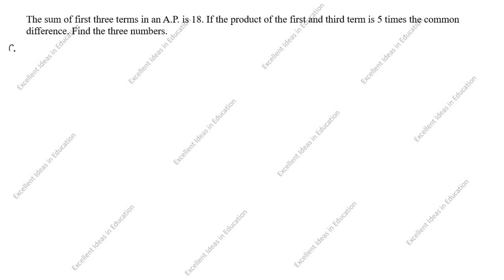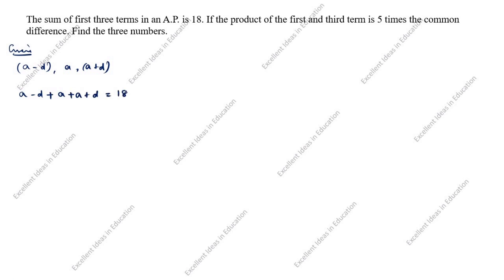What is given in this question? The sum of first three terms. What are the first three terms? A minus D, A, A plus D. Since the sum is given: A minus D plus A plus A plus D is equal to 18.